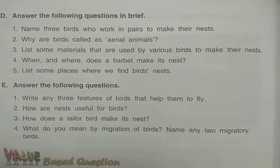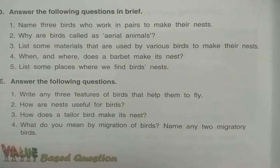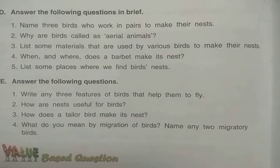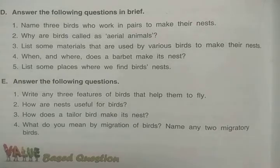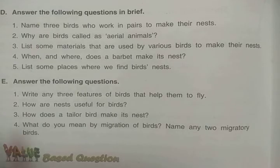Now the question answers of this lesson. First question: name three birds that work in pairs to make their nests — meaning both male and female make the nest together. The three birds are sparrow, sunbird, and dove. These birds make their nests in pairs.